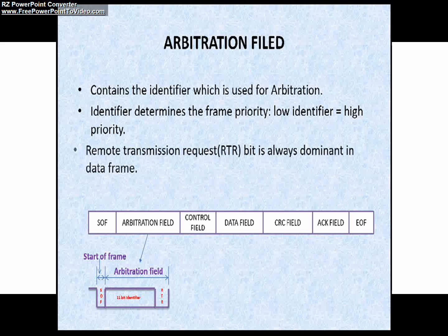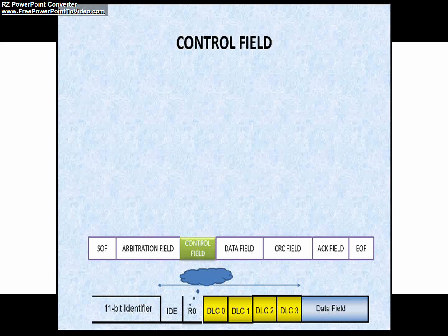Friends, here I have given notes about arbitration field, just go through this. The next field is control field. The control field consists of 6 bits. As you can see in this picture, it comprises of IDE or not, DLC 0 to DLC 3.